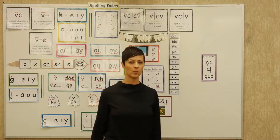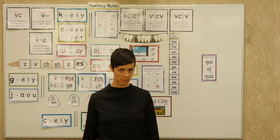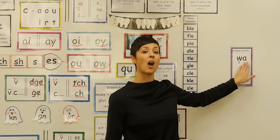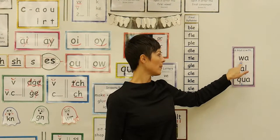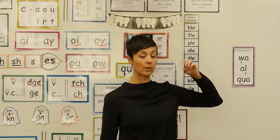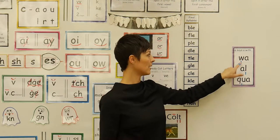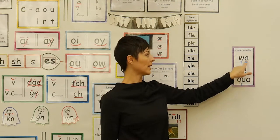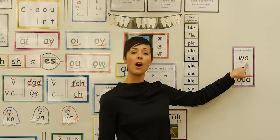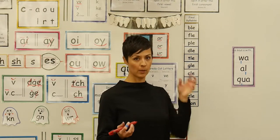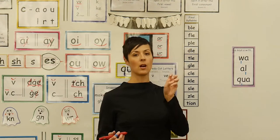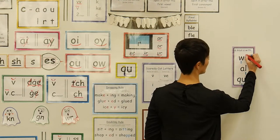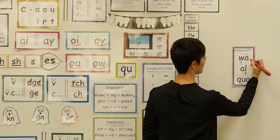In lesson 1.22, we teach the first graders about when A says 'ah.' We teach them that there are three cases where it really commonly does this. W followed by A will make the A say 'ah.' And to show that, we code it with two dots above the A, which are called an umlaut. So we code it with an umlaut.